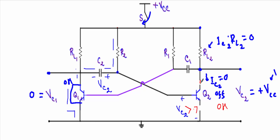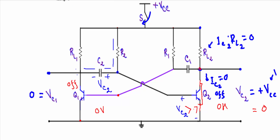When Q2 turns on, its collector and emitter terminals get shorted, so Vc2 equals zero volt. This zero voltage is applied from the collector to the base-emitter terminal of Q1. As the base-to-emitter voltage of Q1 equals zero volt, transistor Q1 now switches to off state. With Q1 in off state, its collector and emitter terminals get disconnected, so collector current IC1 equals zero.